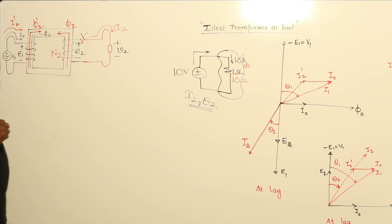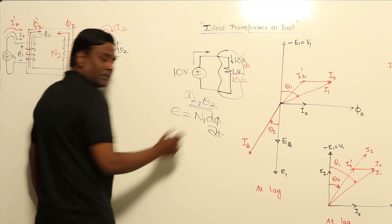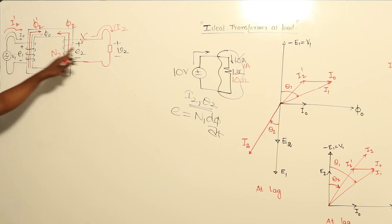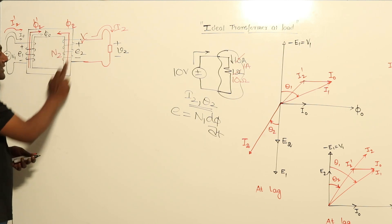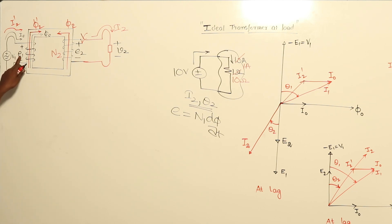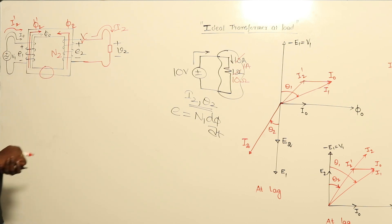If the net flux varies due to φ₀ and φ2, the induced voltage will vary, because induced voltage E1 = N1·dφ/dt. Since V1 is an ideal (infinite) source and cannot be changed, E1 also should not change, meaning the net flux also should not change. Before closing the switch, net flux is φ₀ only. After closing, if φ2 disturbs the net flux, E1 would vary — but that cannot happen.